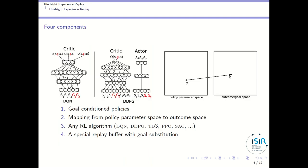Let's go into the presentation of the technical algorithm. To present it, we need four components. The first is goal-conditioned policies. Then you need a mapping from the policy parameter space to the outcome space. You also need any reinforcement learning algorithm like DQN, DDPG, TD3, PPO, or SAC.